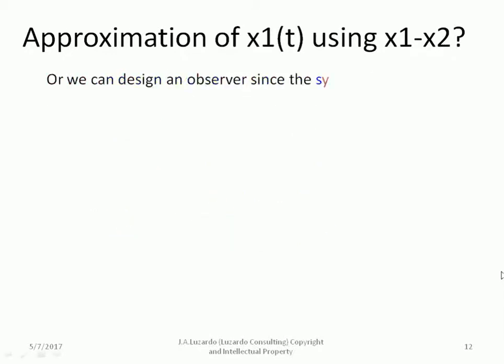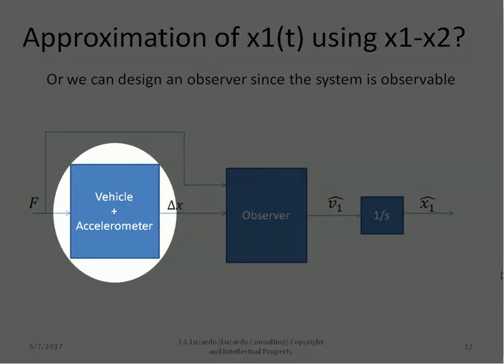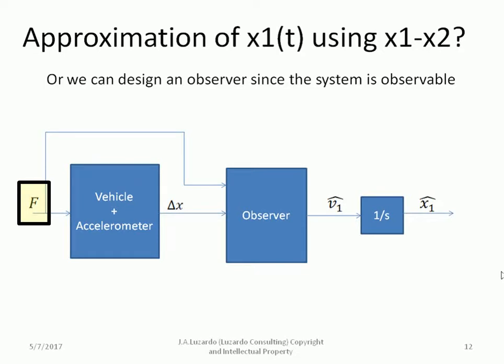We can design also an observer since the system is observable as shown in the figure. The observer will guarantee a perfect convergence between the vehicle velocity and its estimate. But it requires perfect knowledge of the entire system, vehicle plus accelerometer, and access to the input F in order to achieve that result. These requirements are difficult to obtain in real life and we will have to deal with approximation. A good thing about an observer is that it does not require to have the same initial conditions as those of the actual state of the system. The integrators used in conjunction with Ks in the previous slides require to be initialized with the actual initial values of V1 and X1.